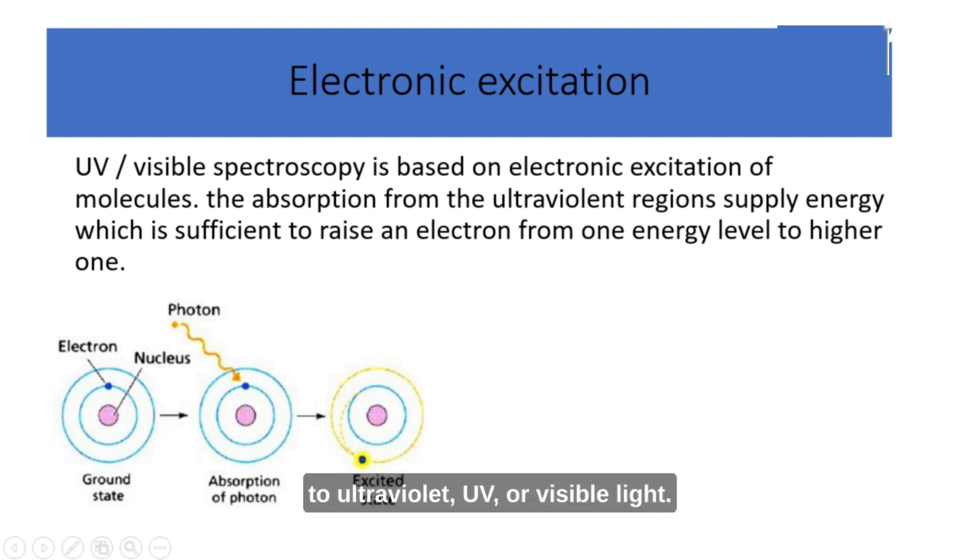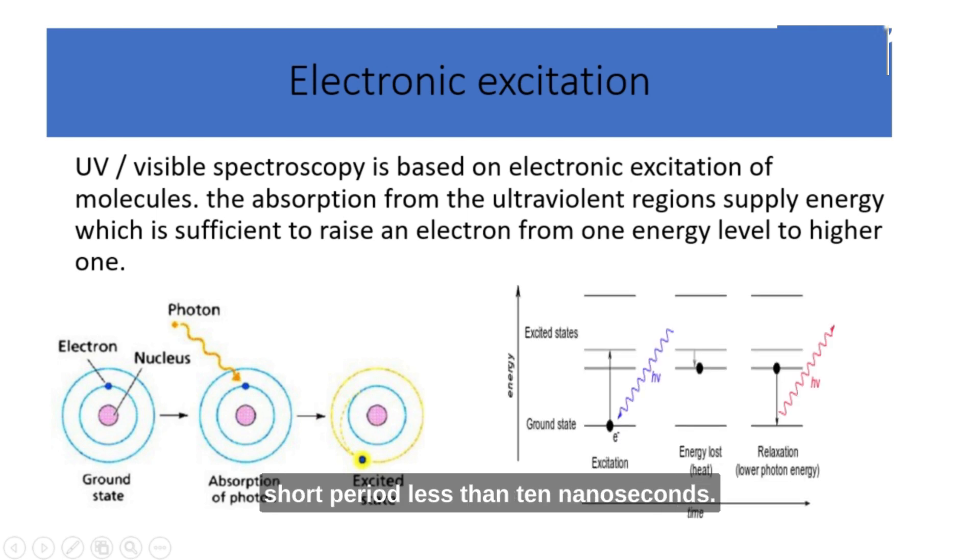When a molecule is exposed to ultraviolet (UV) or visible light, this absorption of light energy promotes an electron from a lower energy level to a higher energy level. The excited state lasts for a very short period, less than 10 nanoseconds, because this state is not stable. Then, the extra energy is lost through a relaxation process, such as the emission of light or heat.